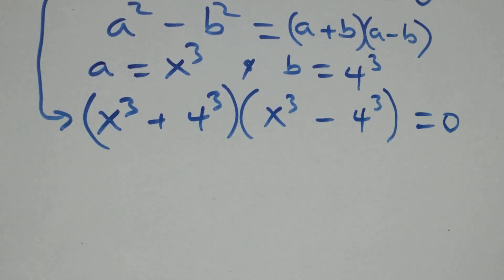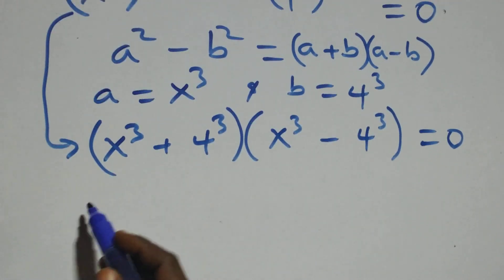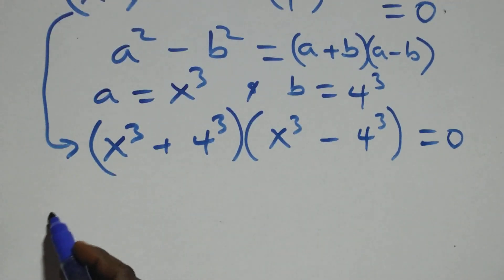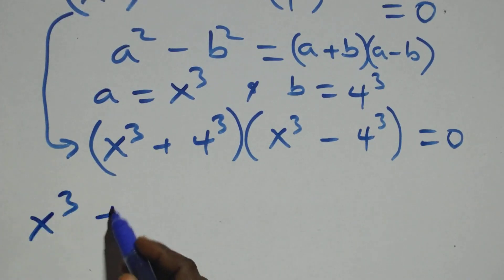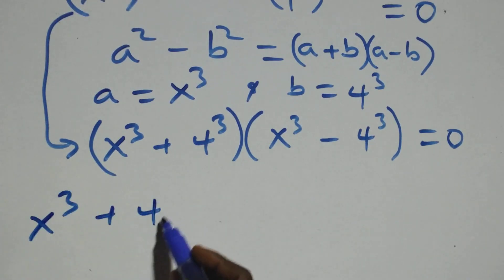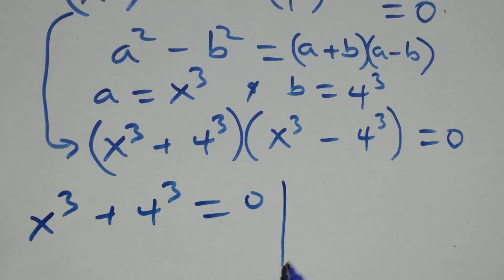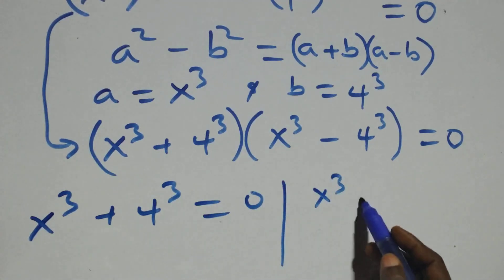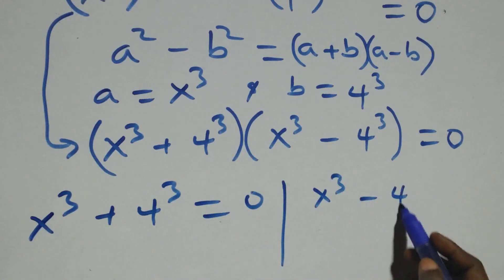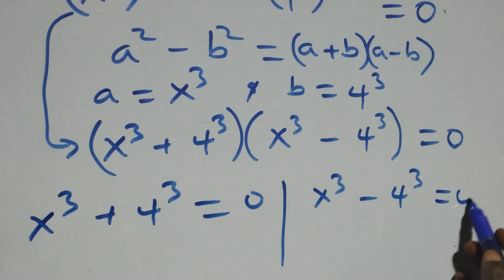Then we have two possible cases: the first one is x cubed plus 4 cubed equals to 0, or x cubed minus 4 cubed equals to 0.